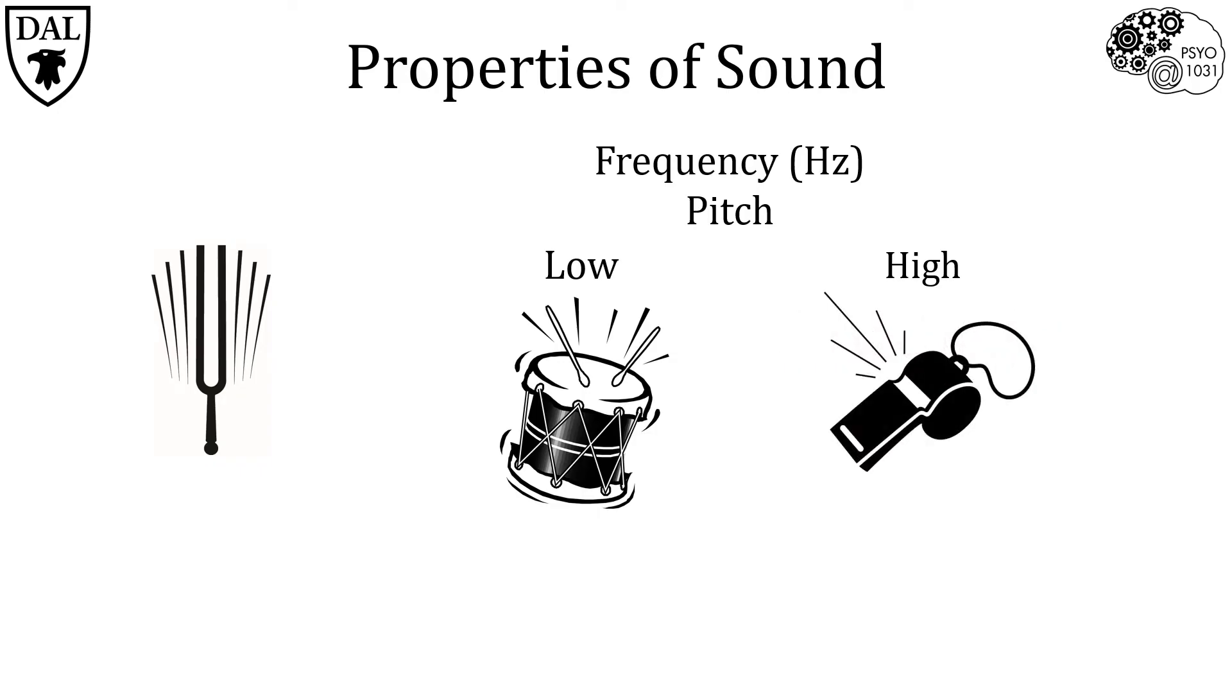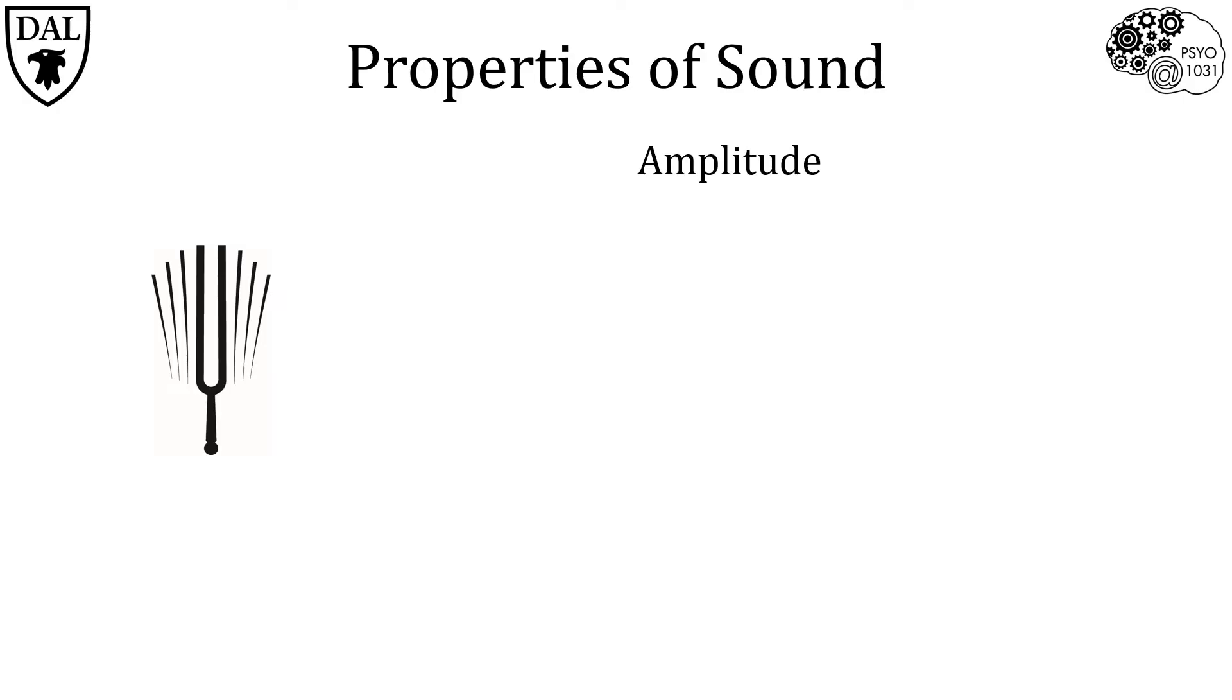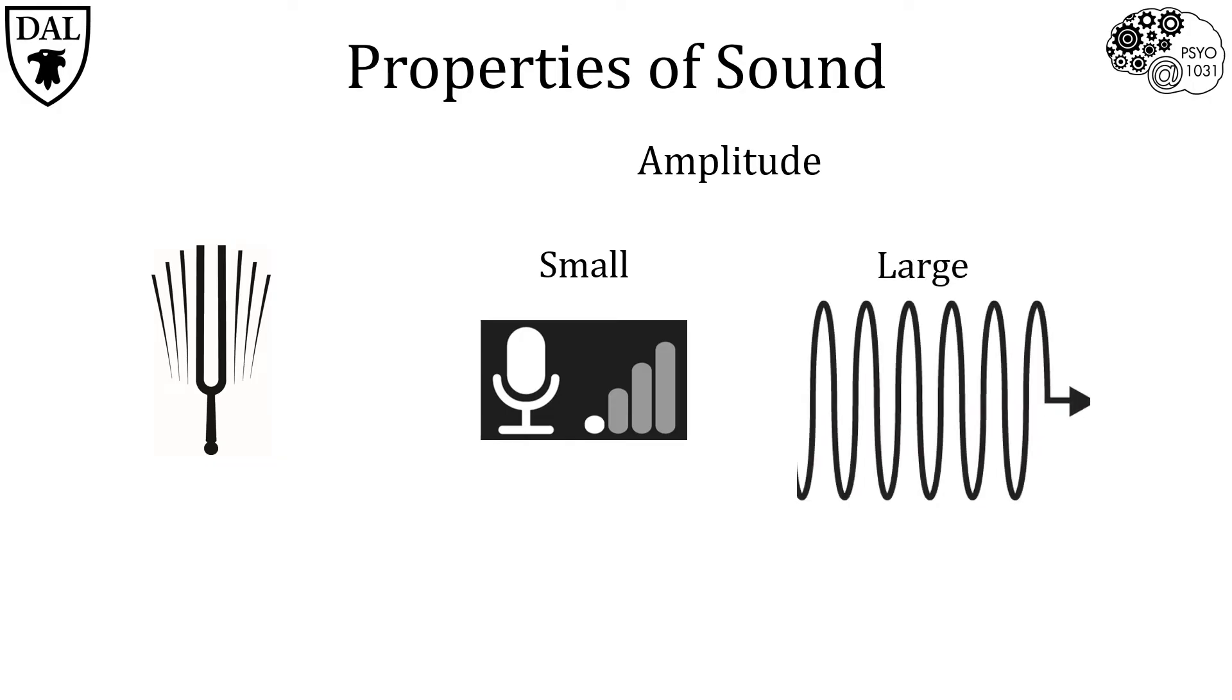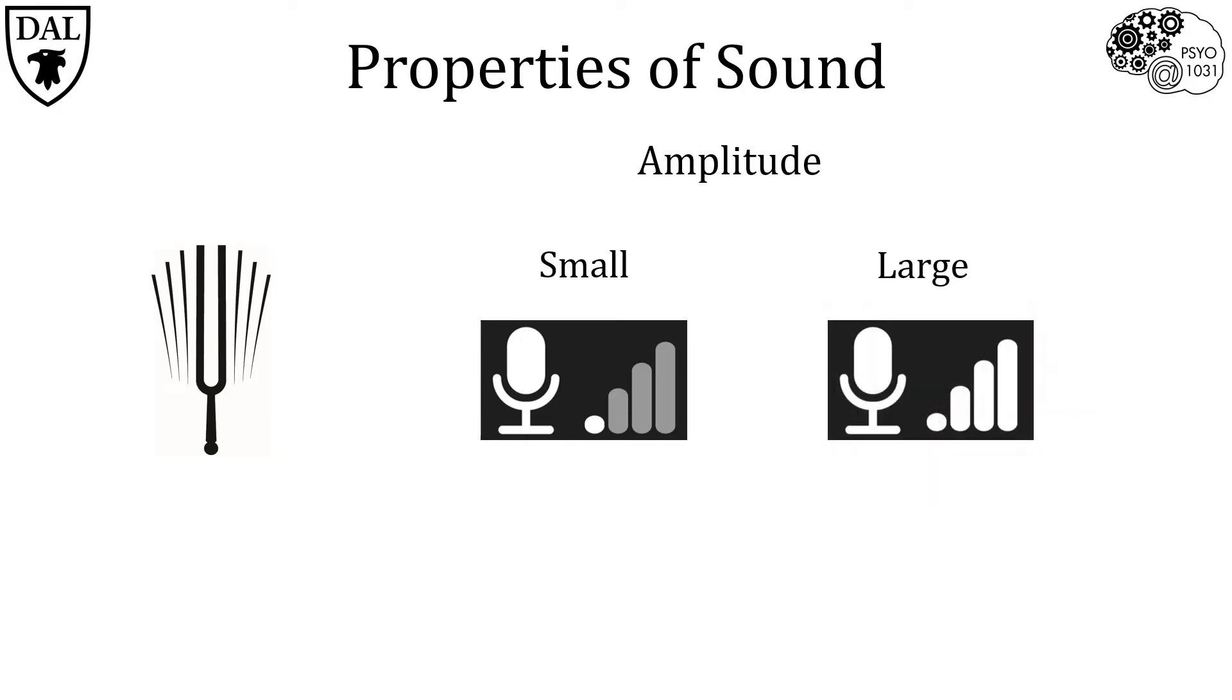The second property we'll look at is amplitude, which is a measurement of the intensity or the volume of a sound wave. The amplitude is a measure of the height of the wave. Two sounds of the same pitch can have different amplitudes. For example, this wave has a small amplitude and would be a loud sound.